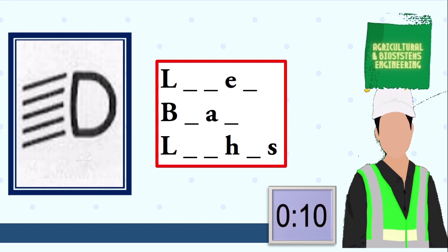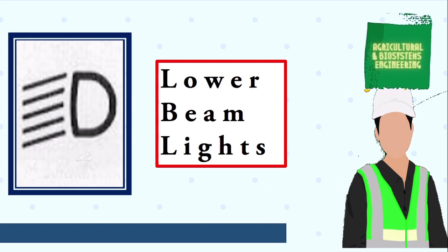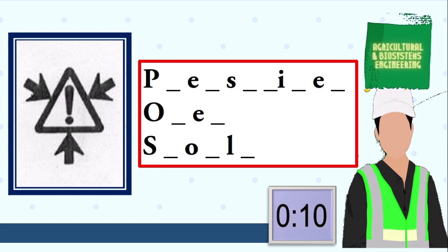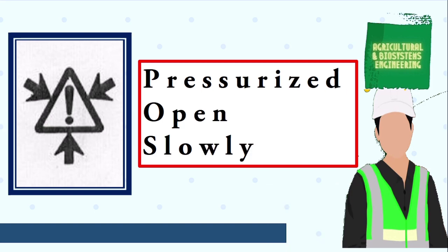Next symbol, your 10 seconds starts now. The answer is lower beam lights. Next symbol, your 10 seconds starts now. The answer is pressurized open slowly. Next symbol, your 10 seconds starts now.